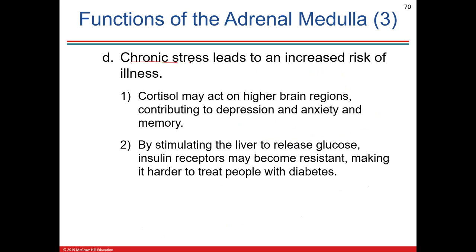Chronic stress is the problem. You don't want prolonged release of norepinephrine as a neurotransmitter and adrenaline as a hormone. Excess cortisol can affect your decision-making and changes your EEG waves — beta waves turn into slower theta waves. This causes problems in thinking and making decisions, affects appetite, and has been linked to depression over time, which affects the brain negatively in other ways.